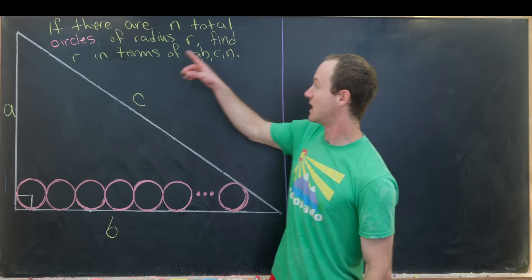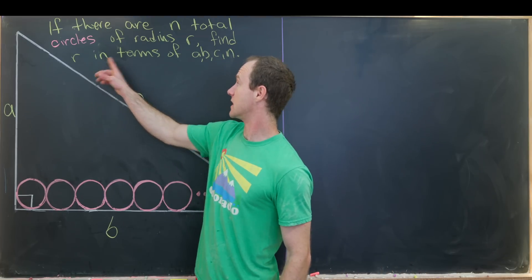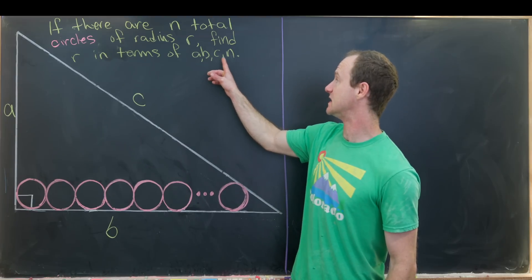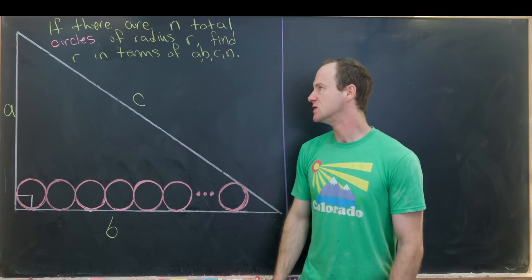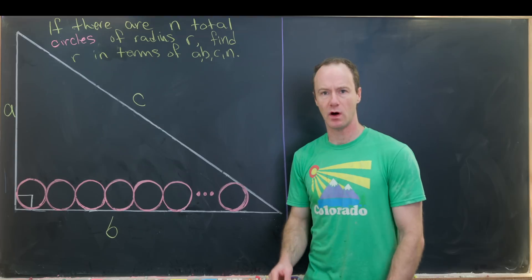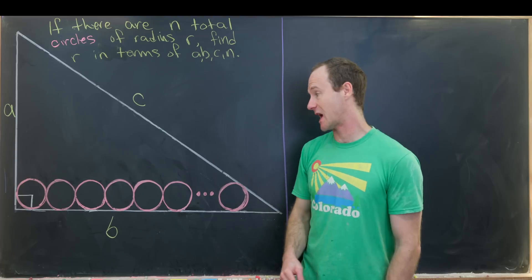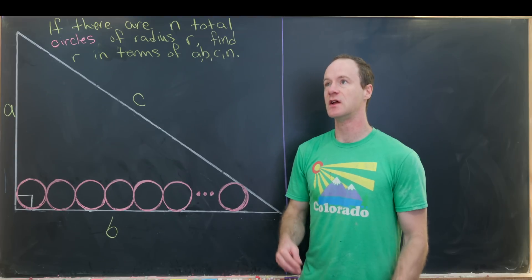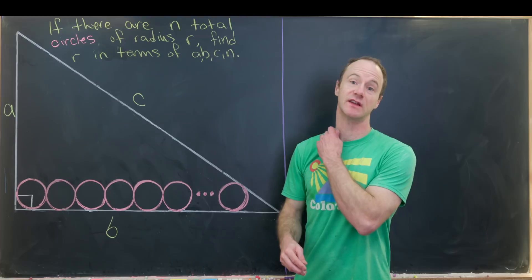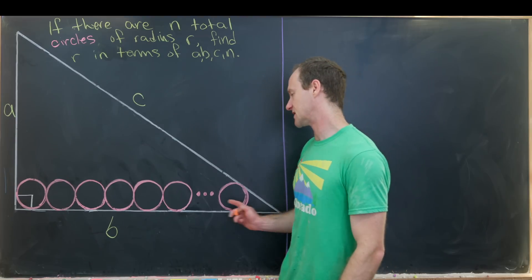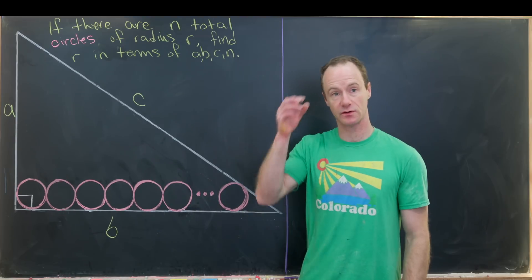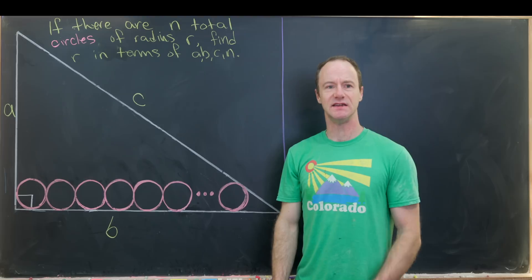Our goal is to find this radius R in terms of A, B, C, and N. Notice if we set N equal to 1 we will get back to the classic result which gives us the radius of a circle inscribed inside of a right triangle. But here we have N total circles. So what's our idea here?